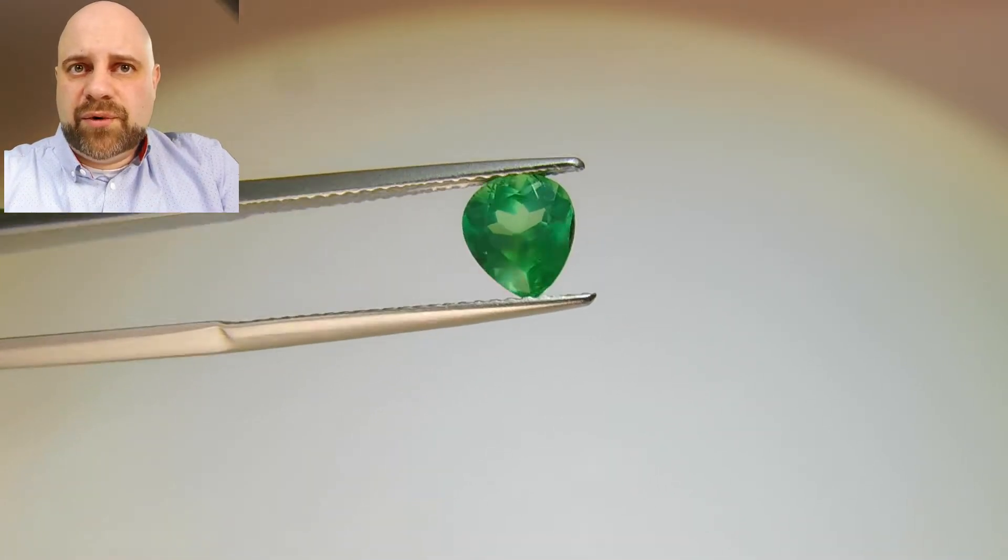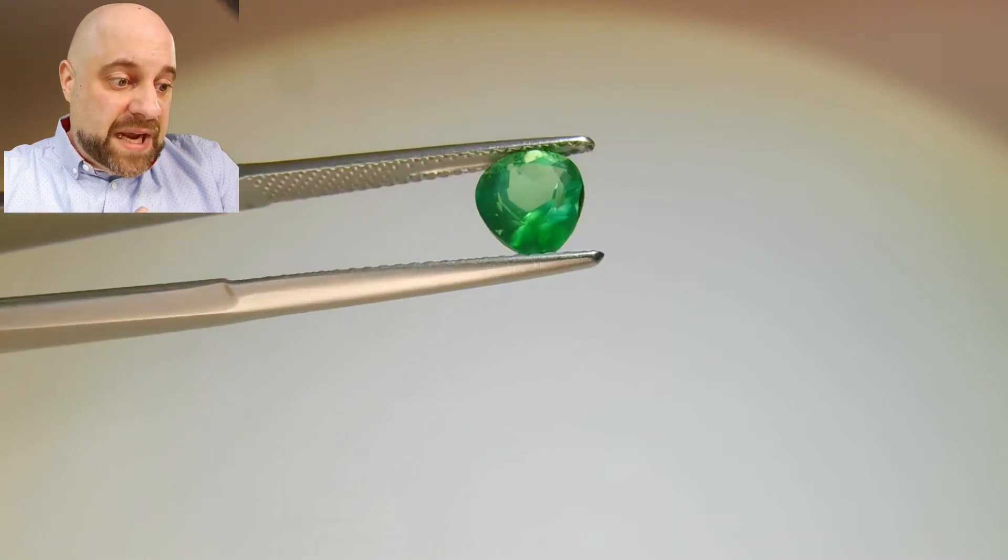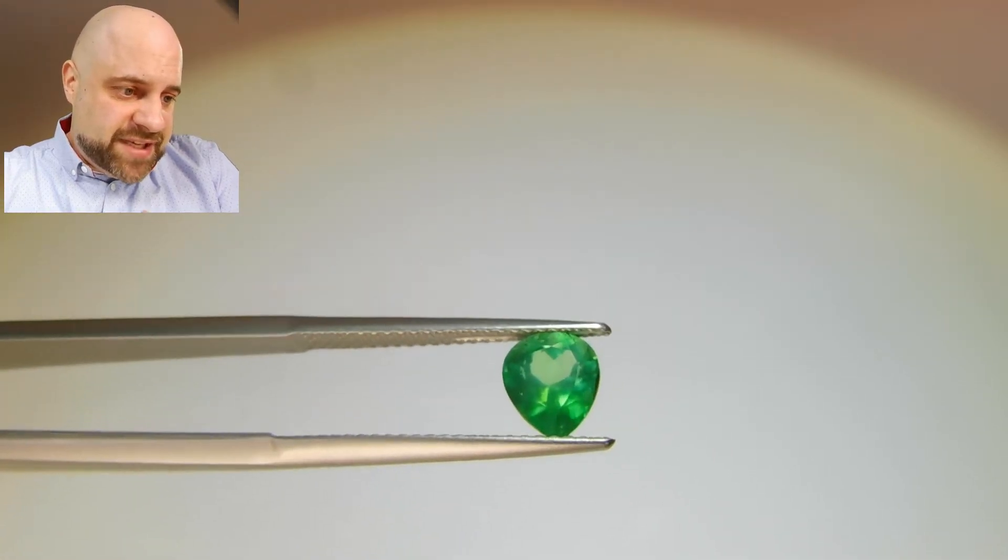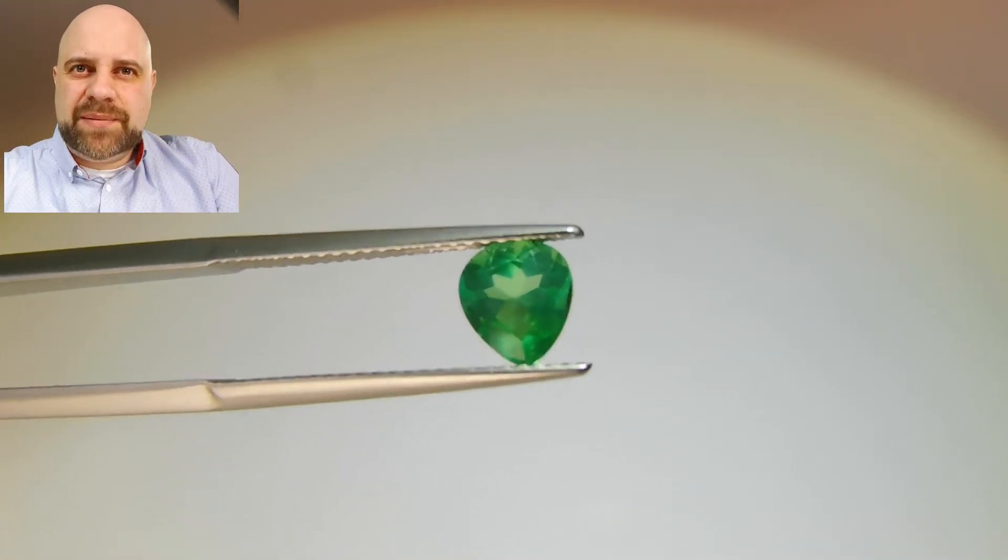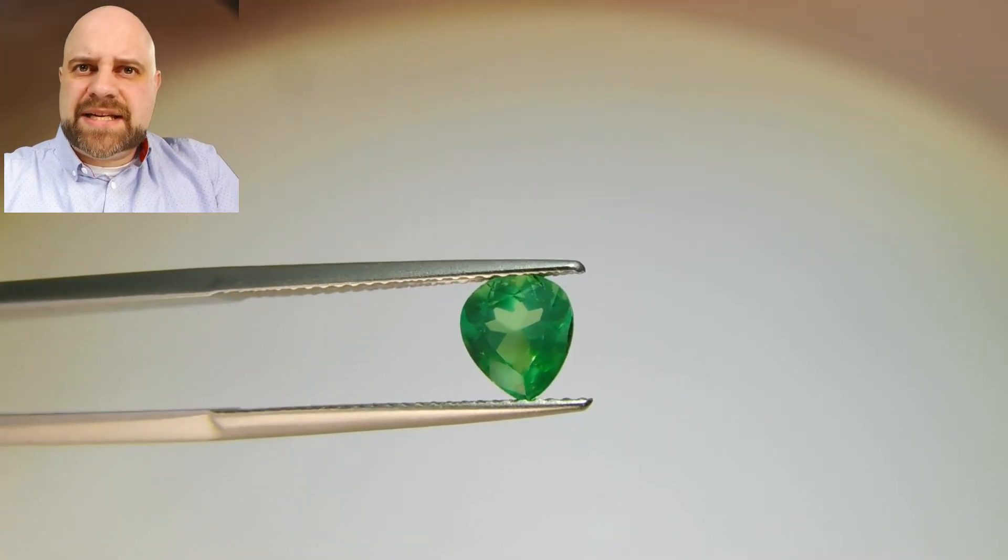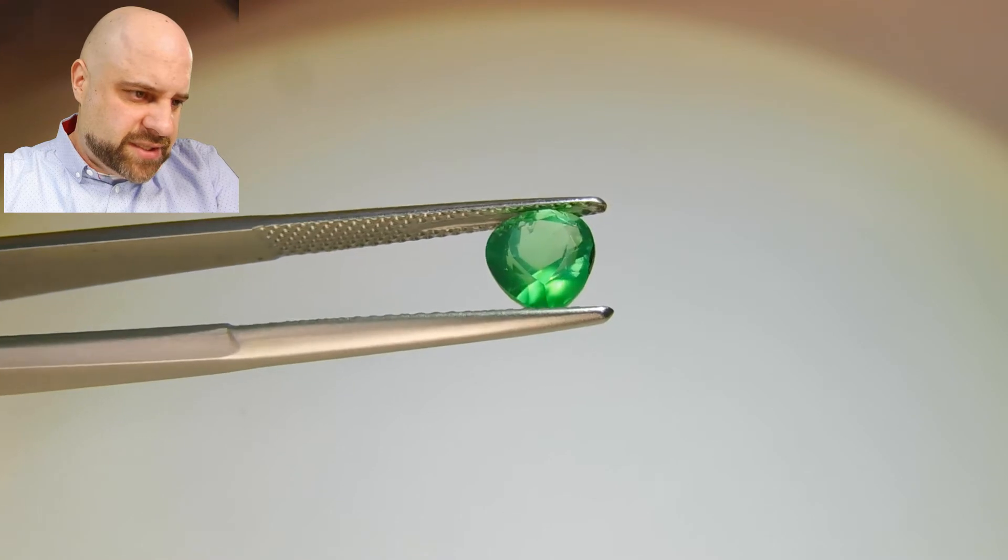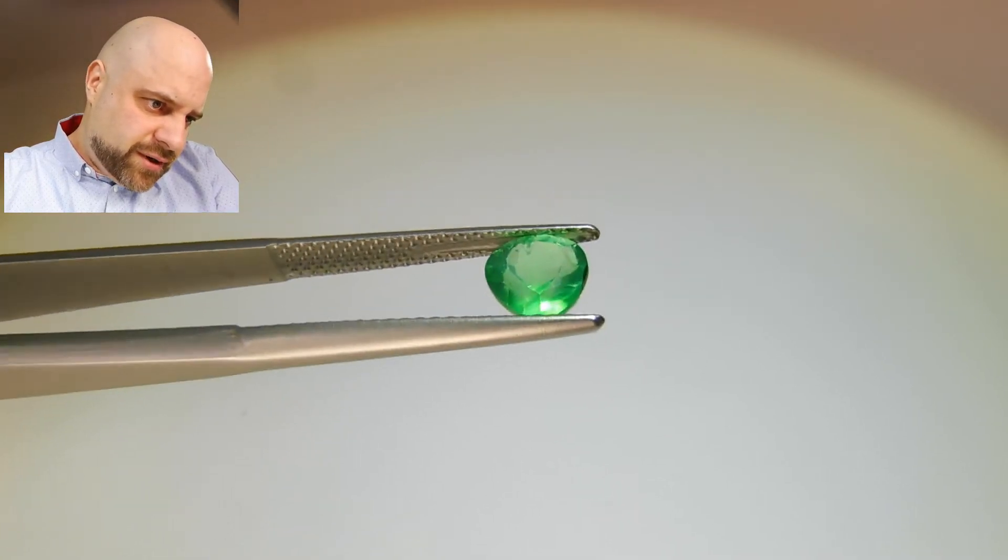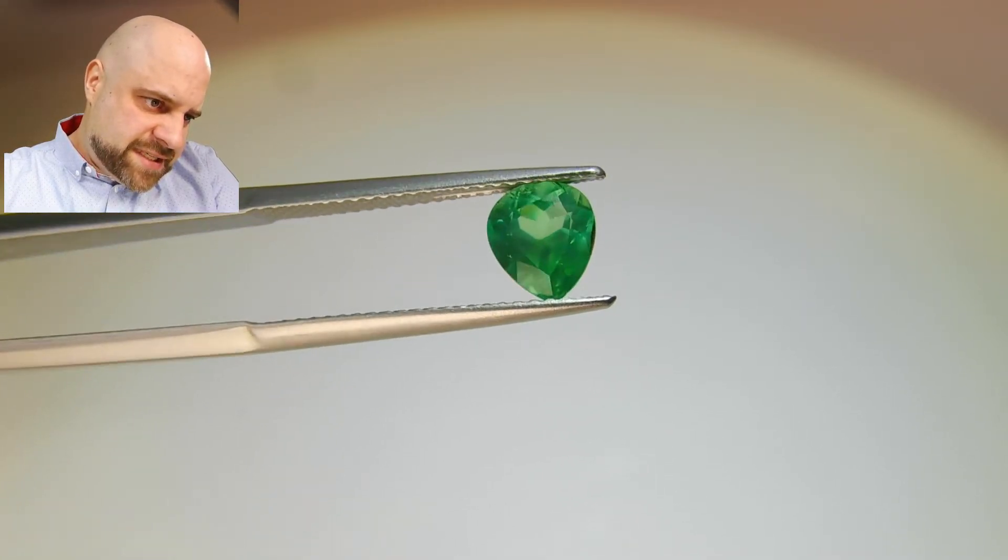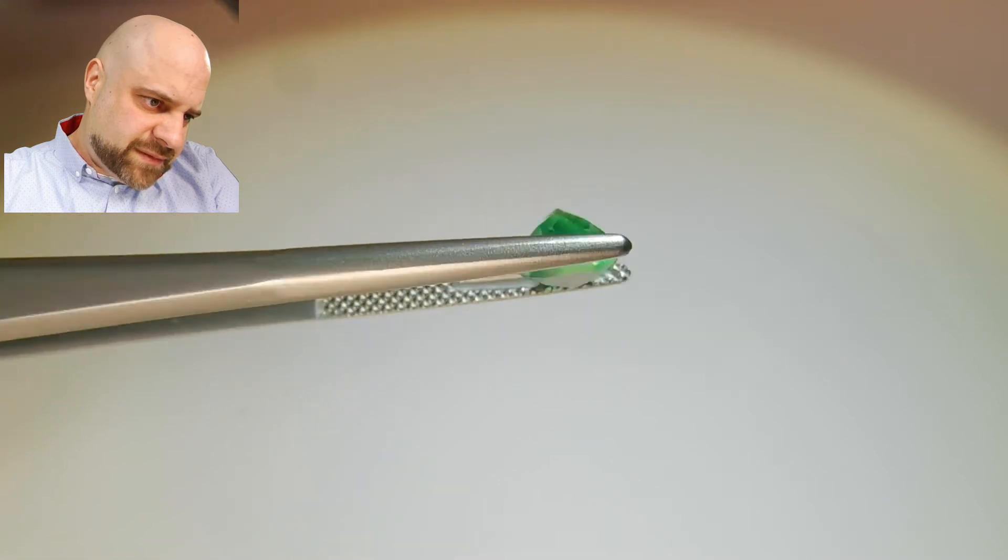Otherwise they'd be going with diamonds. So I think the shape of this squat pear shape really actually lends itself to a nice engagement ring design with either a single or a double halo around it and really make something splendid.